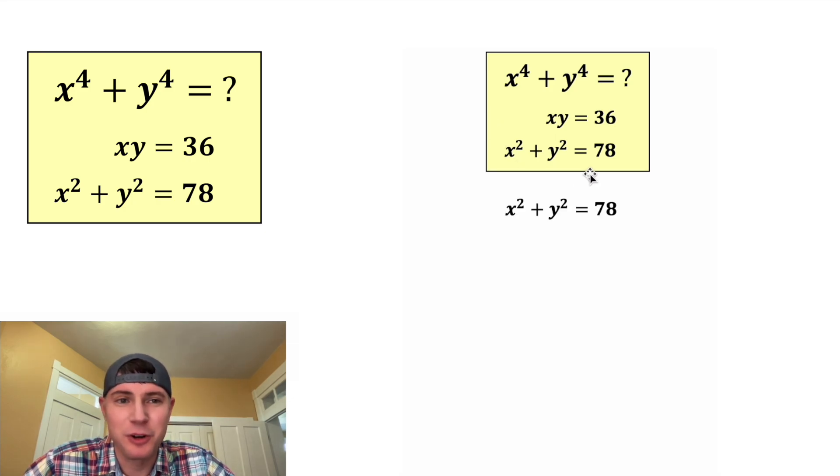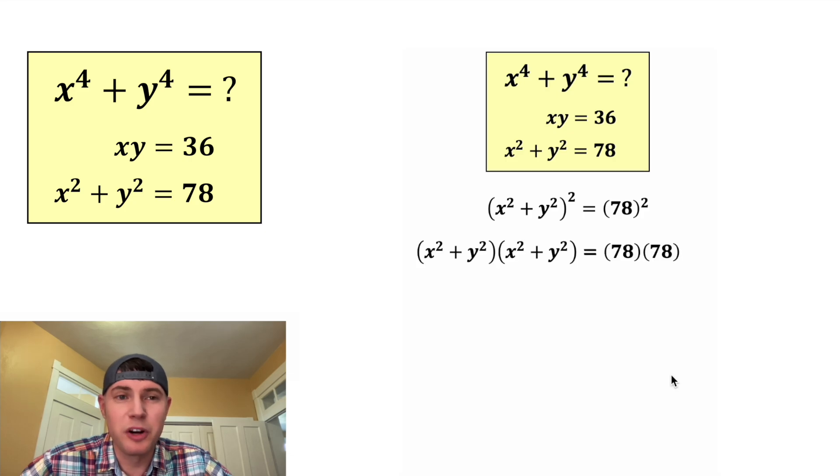Let's copy down the x squared plus y squared equals 78, and let's square both sides of the equation. The squareds mean that we're going to have this times this equals this times this. On the right-hand side, 78 times 78 is equal to 6,084.